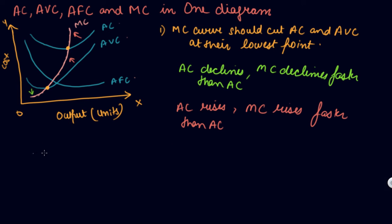The third or fourth point is that MC must cut AC from its lowest point. This is a very important question you can have in your CBSE board exams. The main thing the examiner will check is whether you have cut MC from the lowest point of AC and AVC. This is the key thing to keep in mind while making this diagram.